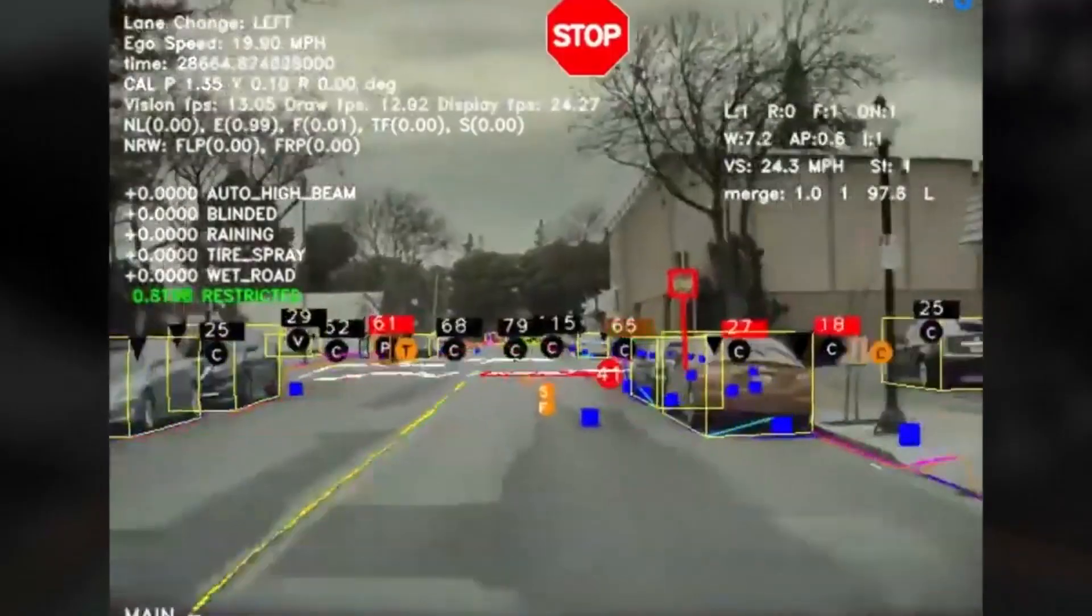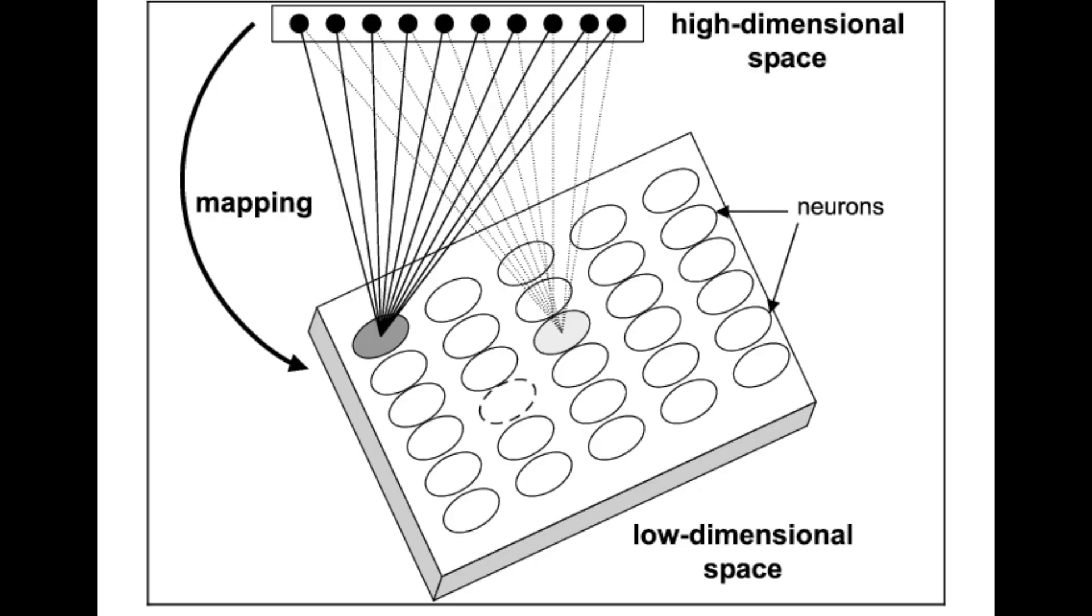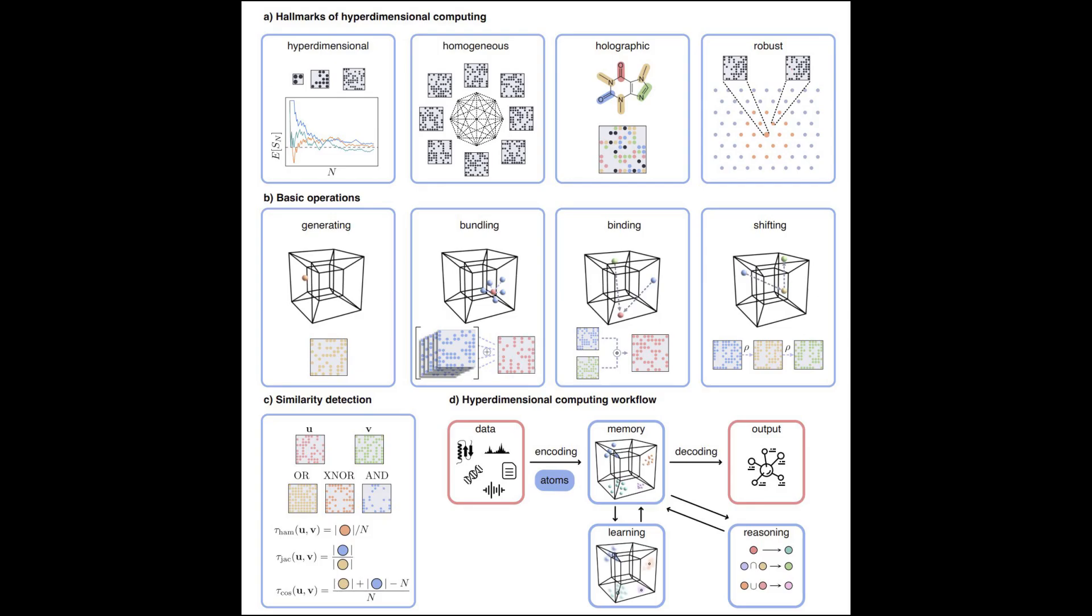While my perspective on hyperdimensional computing is cool, the technical aspects of hyperdimensional computing are also worth talking about. The core idea is to represent data using high dimensional vectors, typically with thousands or even millions of dimensions. These vectors are often binary or integer valued, making them computationally efficient to work with. In hyperdimensional computing, information is encoded and manipulated using a set of arithmetic operations called hyperdimensional operations.